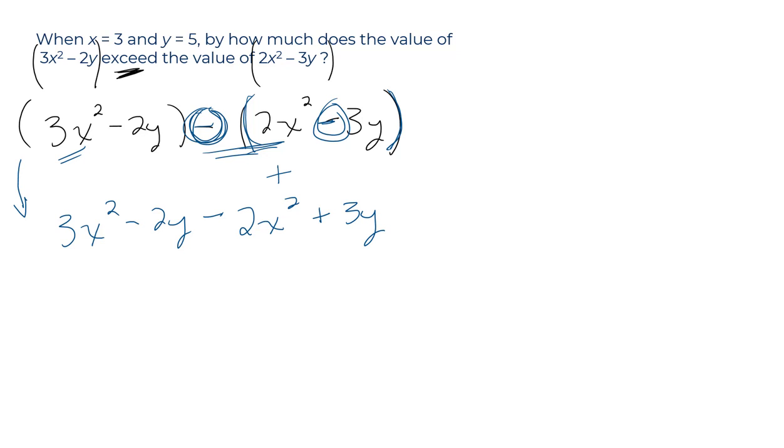All right, now let's combine like terms. 3x squared minus 2x squared leaves us with simply x squared minus 2y. But then plus 3y gives us plus y.